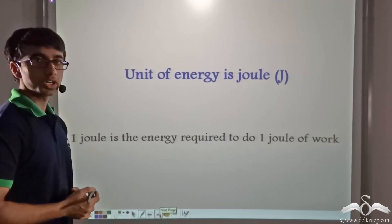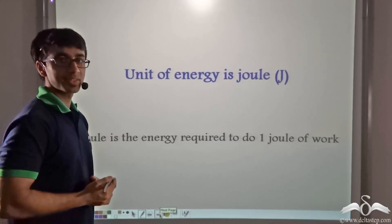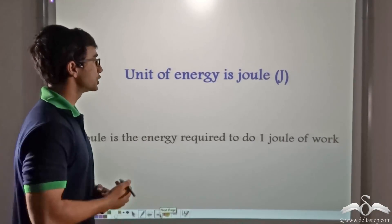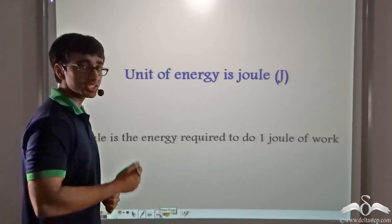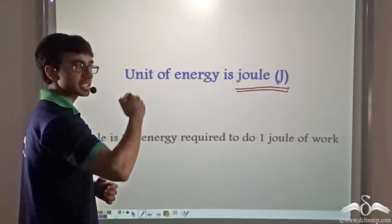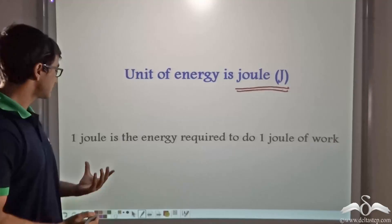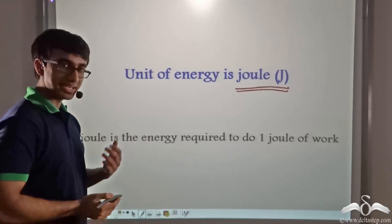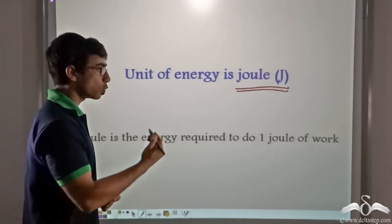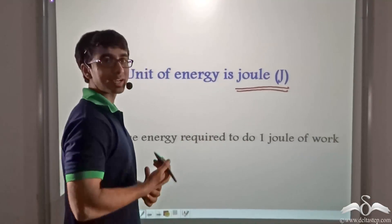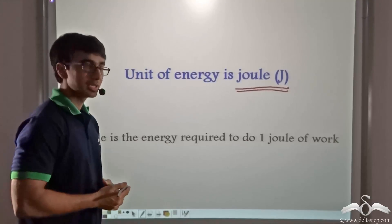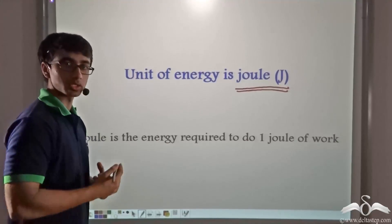Now the unit of work we have seen is joules, and since energy and work can be equated with one another, we say that the unit of energy is also joule, represented by the capital letter J. One joule of energy is defined as the energy required to do one joule of work. So if I am spending one joule of energy in going from one point to another, I am doing one joule of work.